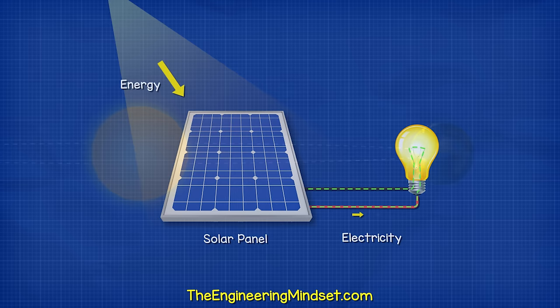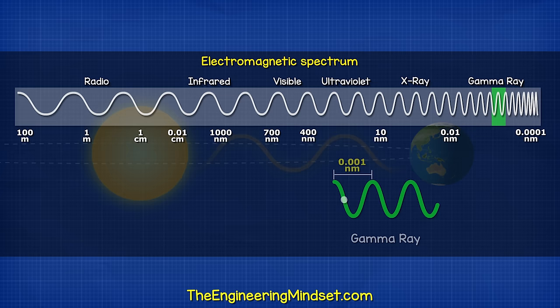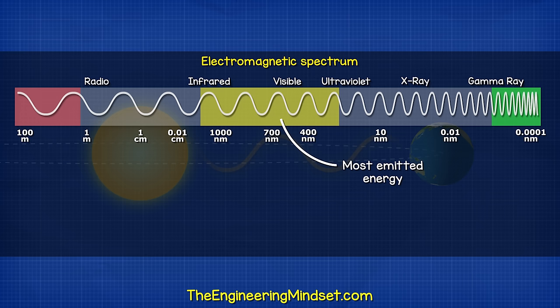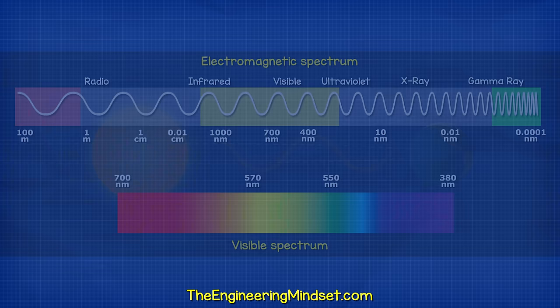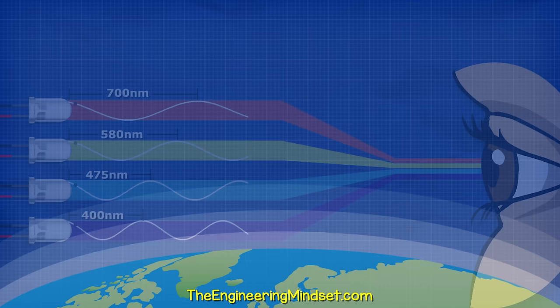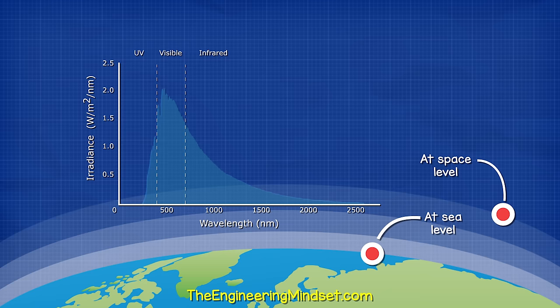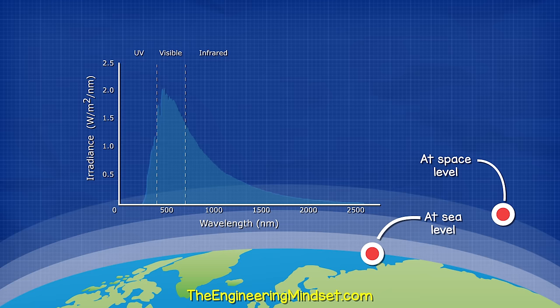When we talk about efficiency, we mean the energy from the sun and how much is converted into electricity. The energy travels in waves. The waves are different sizes, from tiny but high energy gamma rays to large low energy radio waves. But most of its emitted energy is in the ultraviolet, visible and infrared region. The visible spectrum is what the human eye can see. The wavelength determines what color light the eye will see. If we measure the energy per area by wavelength in space, we see a curve like this. But down at sea level, it looks more like this. And that's because the atmosphere has absorbed and also deflected some of the energy.